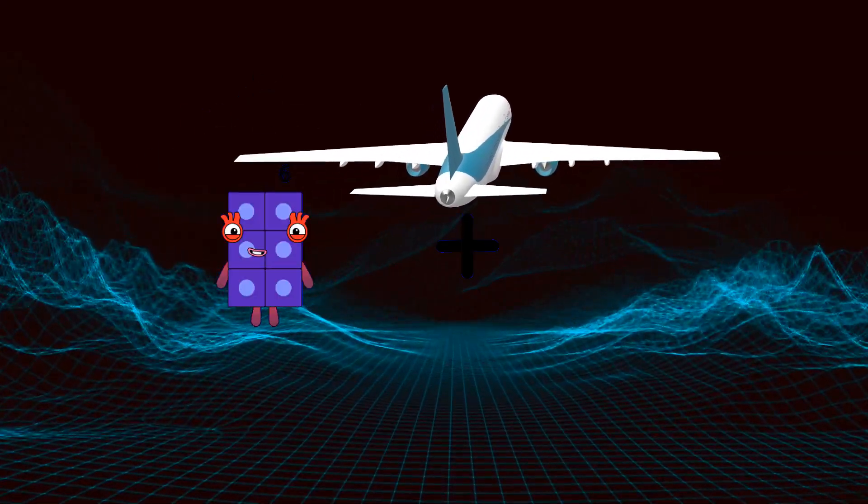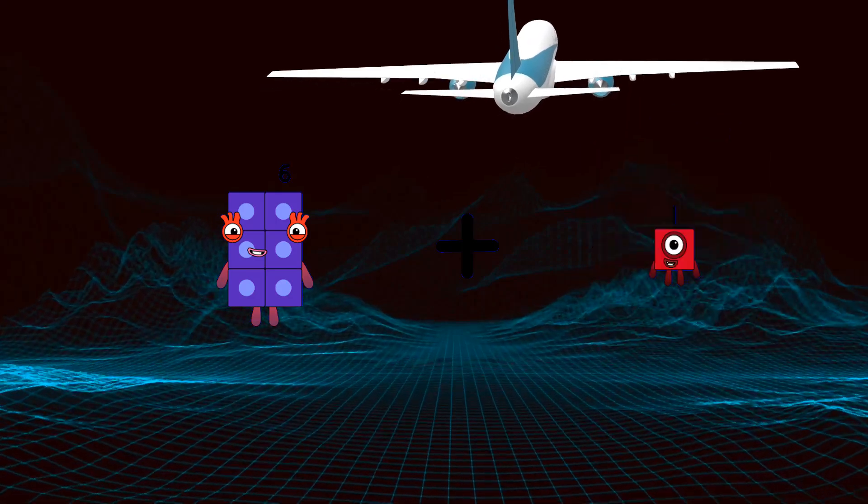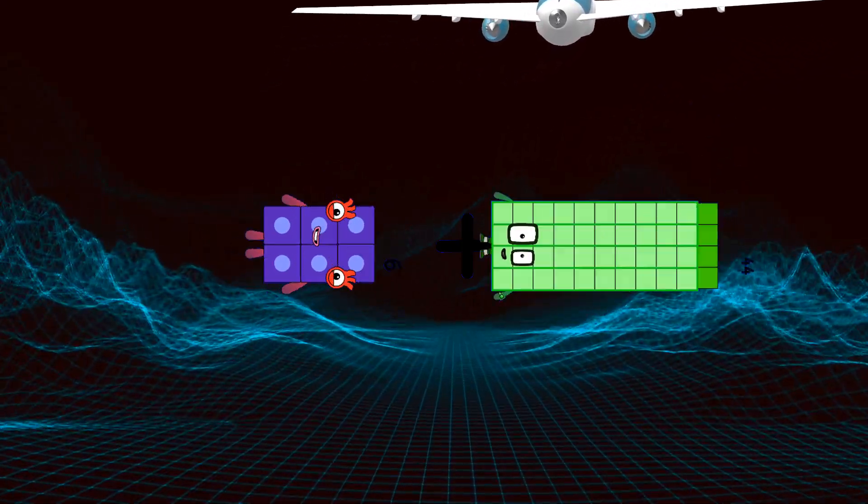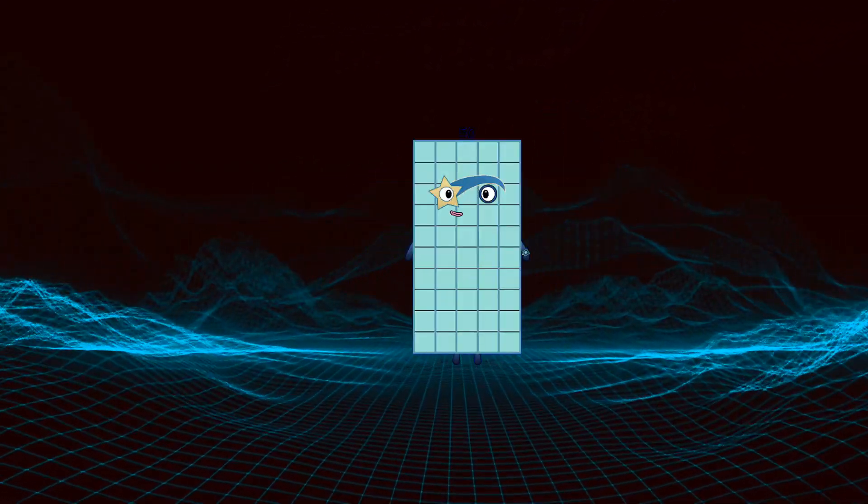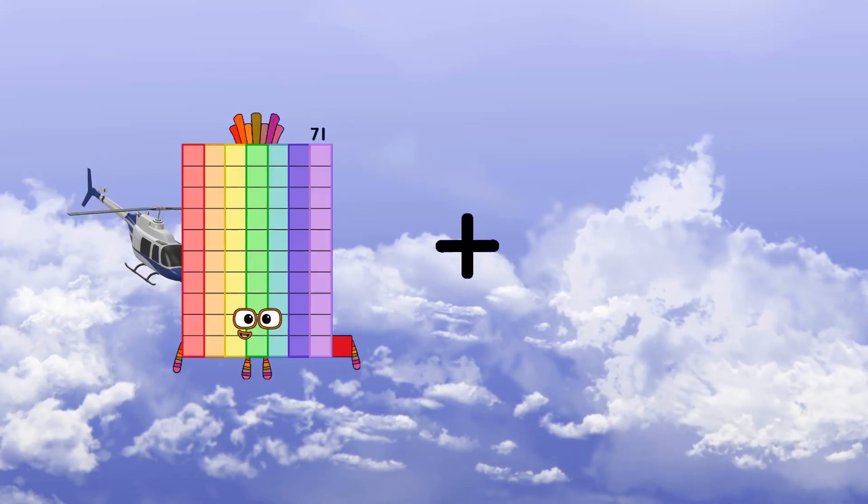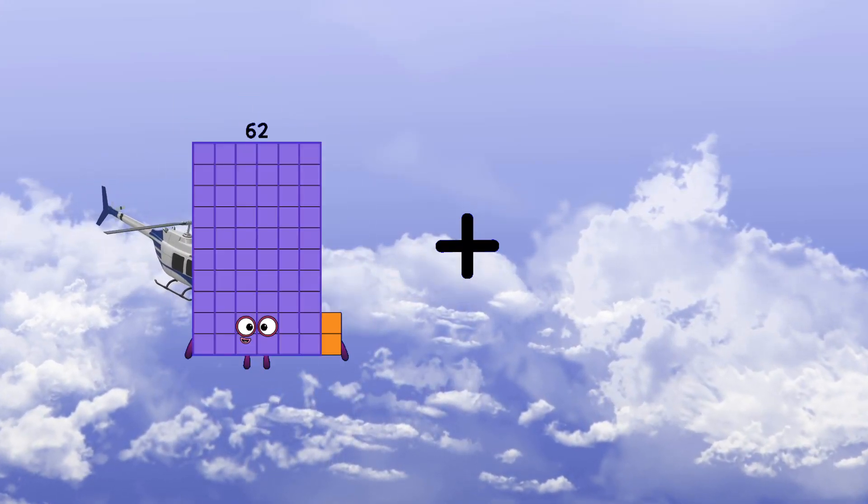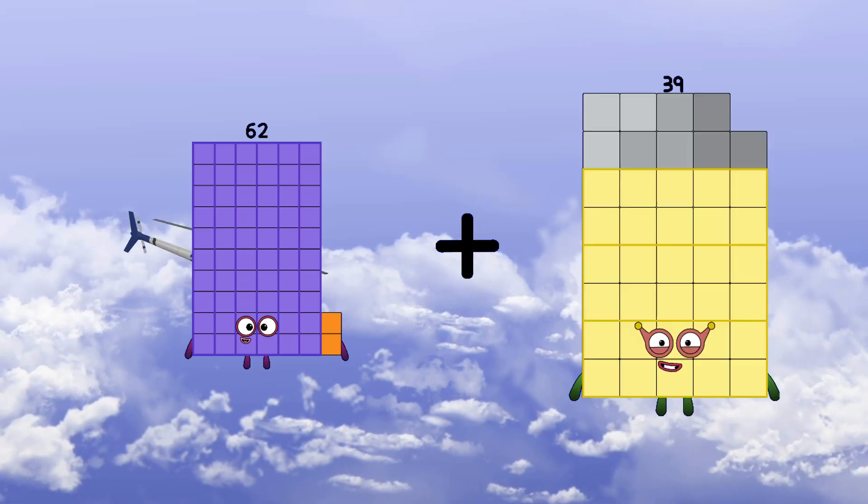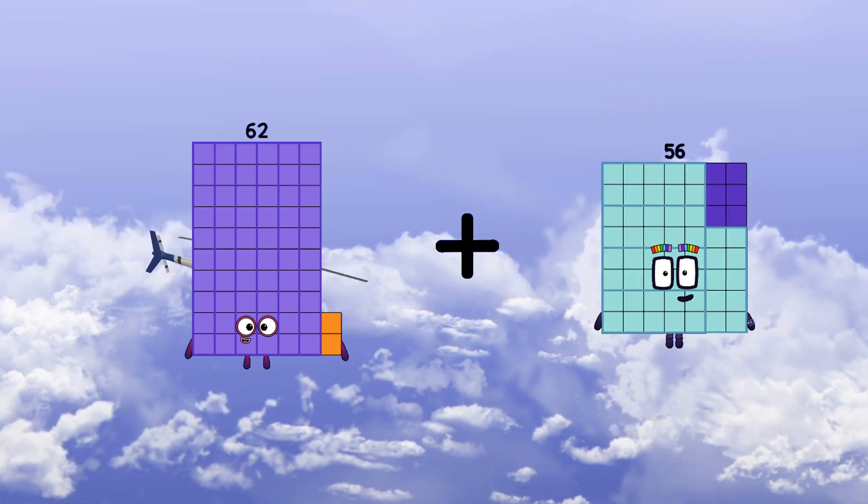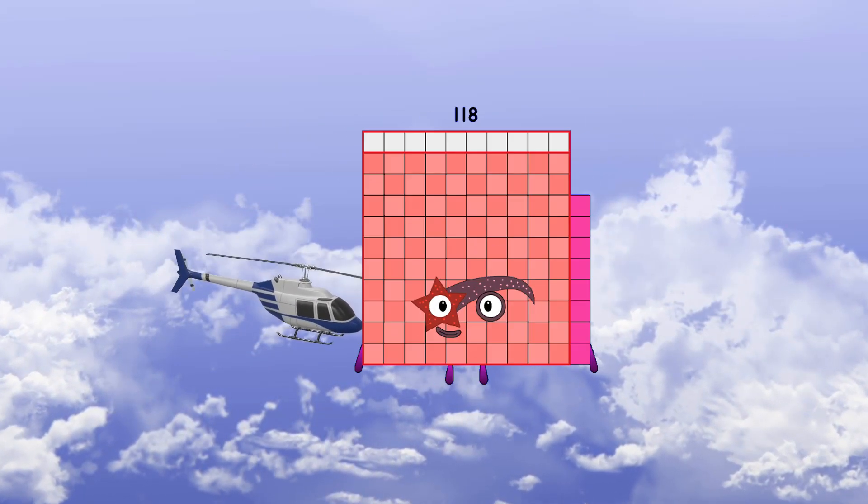Six plus forty-four equals fifty. Sixty-two plus fifty-six equals one hundred eighteen.